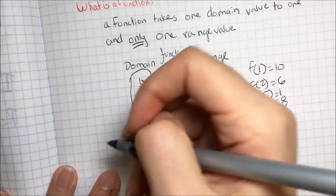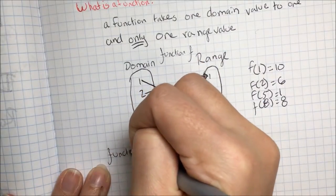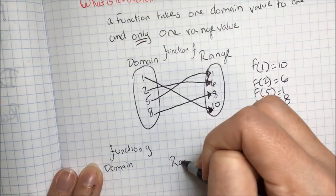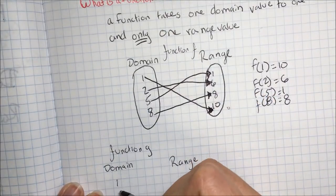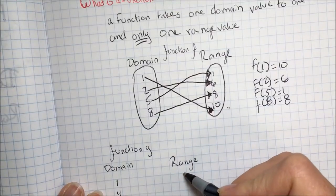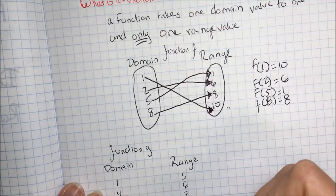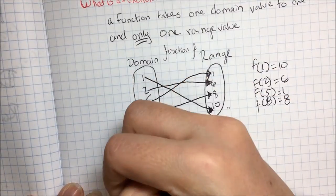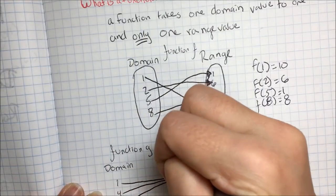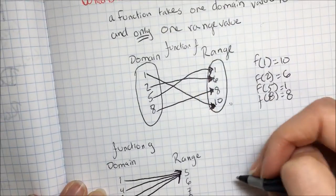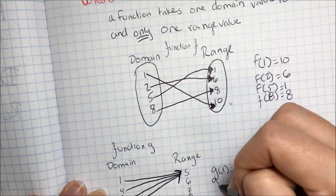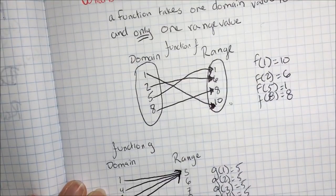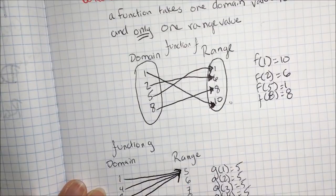Another example of a function — let's say function g. Here's my domain, which are my x's, and my range, which are my y's. Domain is 1, 4, 3, 2, and range is 5, 6, 7, 8. This function g takes all of my domain values and sends them all to 5. So no matter what I put into this function, I get out 5. So g(1) is 5, g(2) is 5, g(3) is 5, g(4) is 5. This is also a function because each domain value has only one range value.